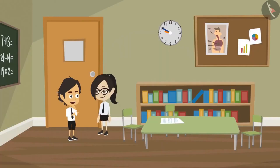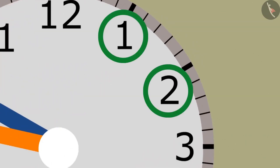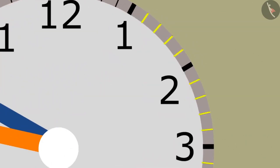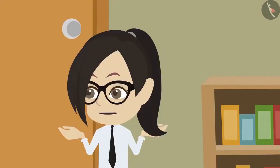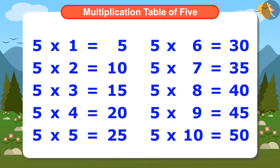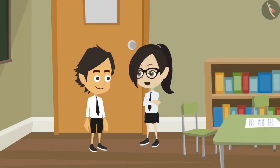How are you counting the minutes? Look at the numbers on the clock and the small markings in between them — these have to be counted to find out the minutes. Hey Vandana, you don't need to count. Then how will we find out how many minutes have passed? I use the multiplication table of 5.